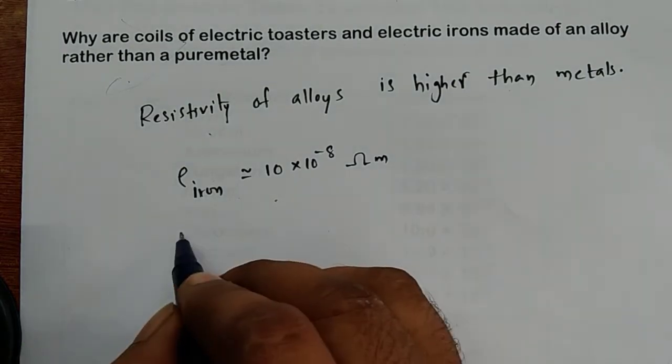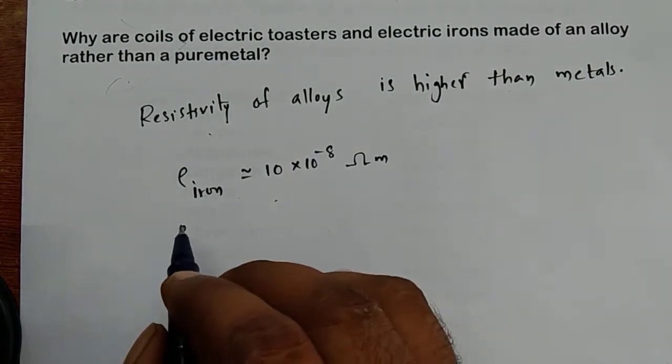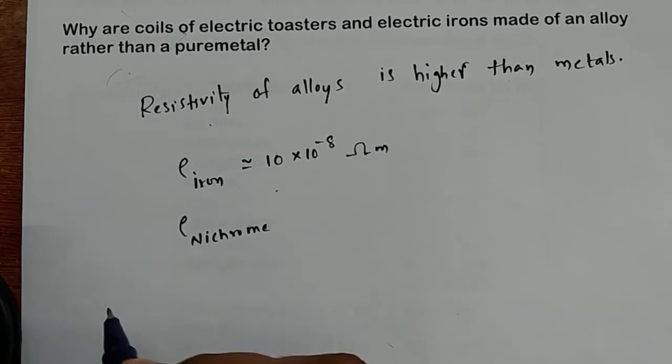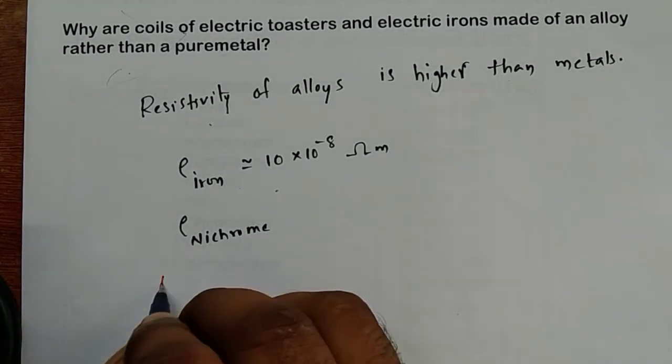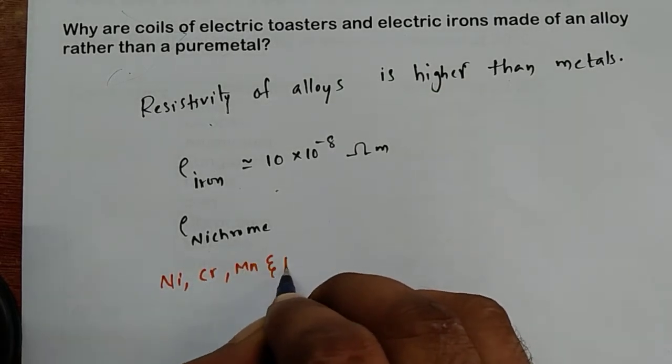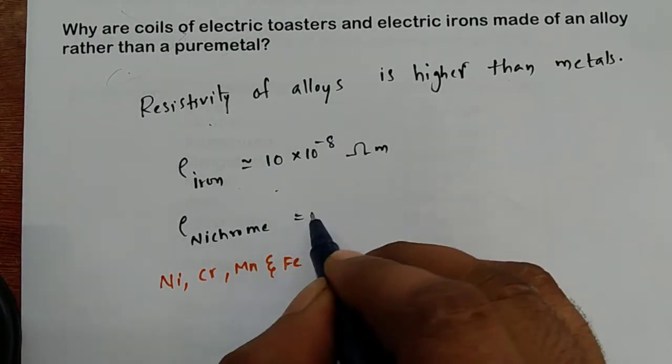And if you take the resistivity of nichrome, it's an alloy made up of nickel, chromium, manganese and iron. The resistivity is 100 × 10^-6 ohm meter.